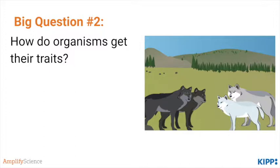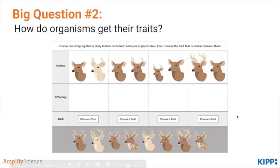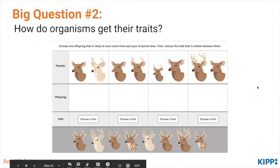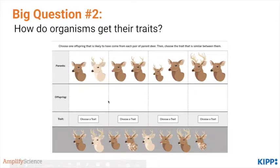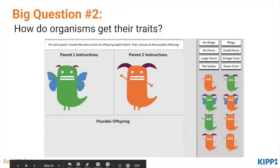How do organisms get their traits in the first place? Students dive in by reading the book The Code, which introduces students to DNA and explains that it has the instructions for making you who you are, for giving you your physical traits. It explains that you get half of your DNA from your mom and half from your dad, and that you're a mixture of their traits. Students then look at examples from animals such as deer, and decide what type of offspring are possible with certain traits from each set of parents. Next, students look at silly monsters to decide what monster babies are possible from two monster parents.